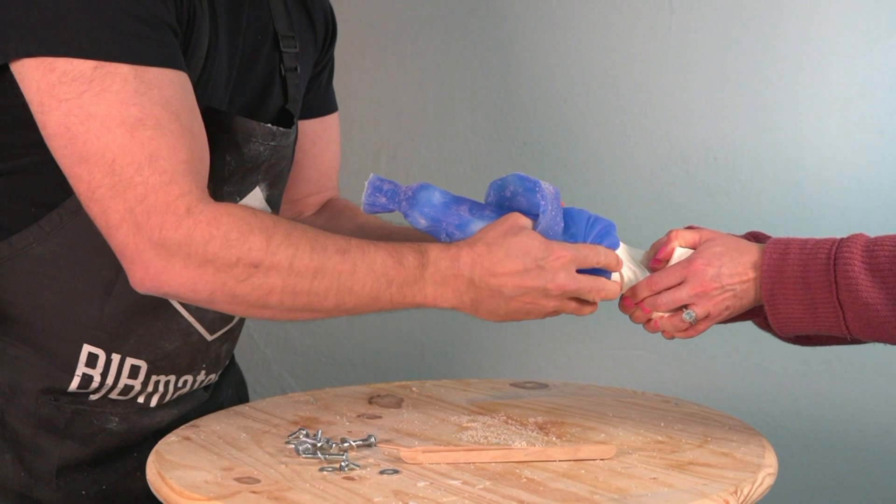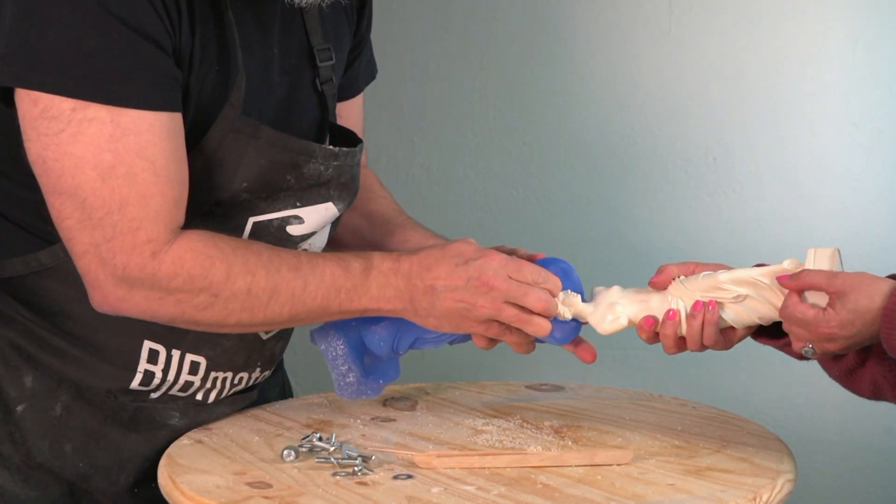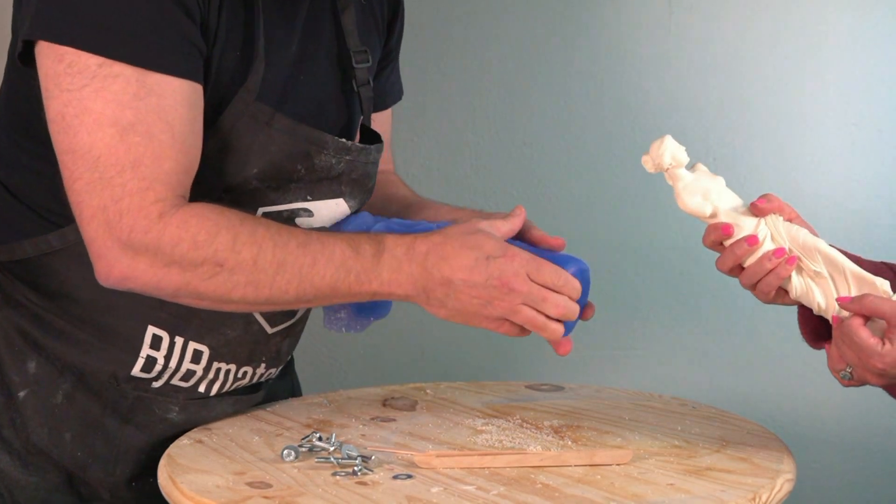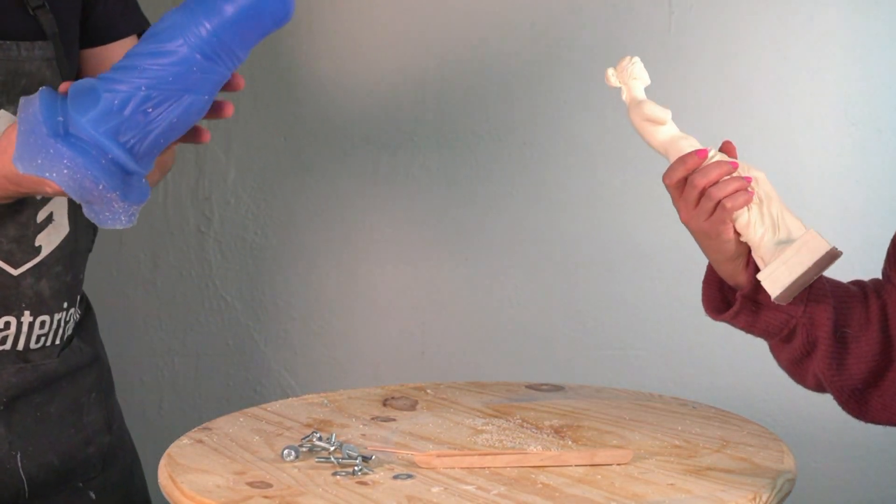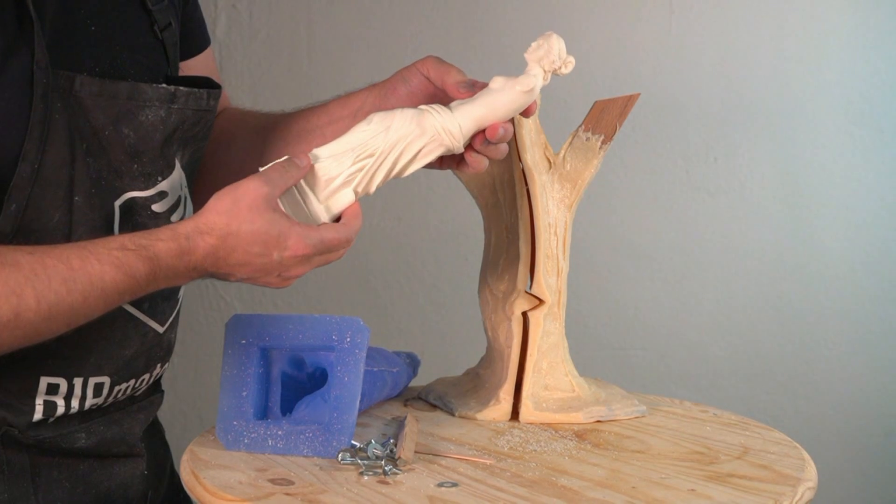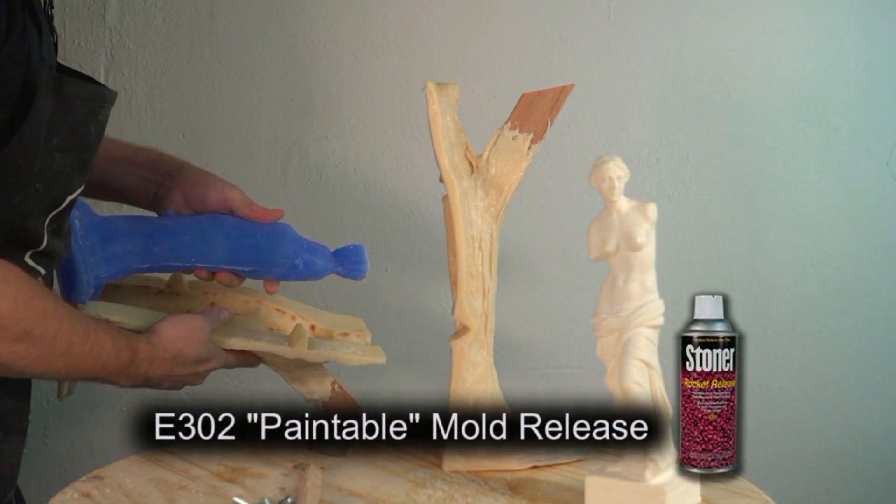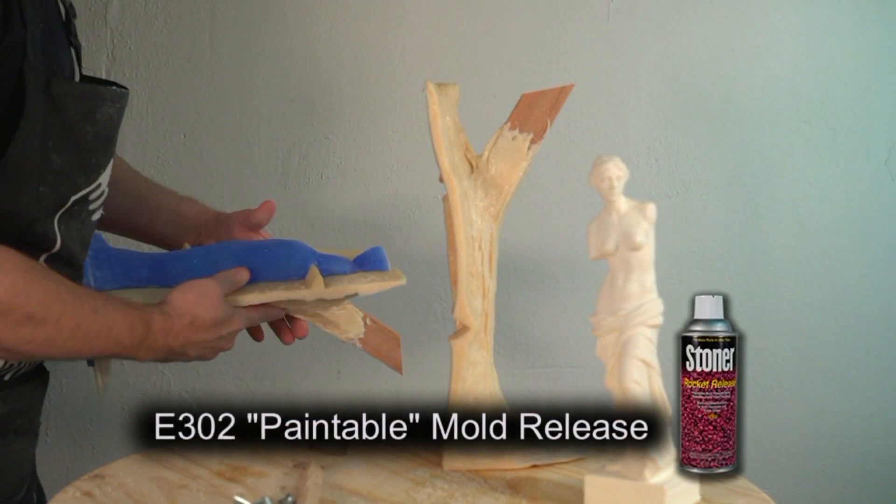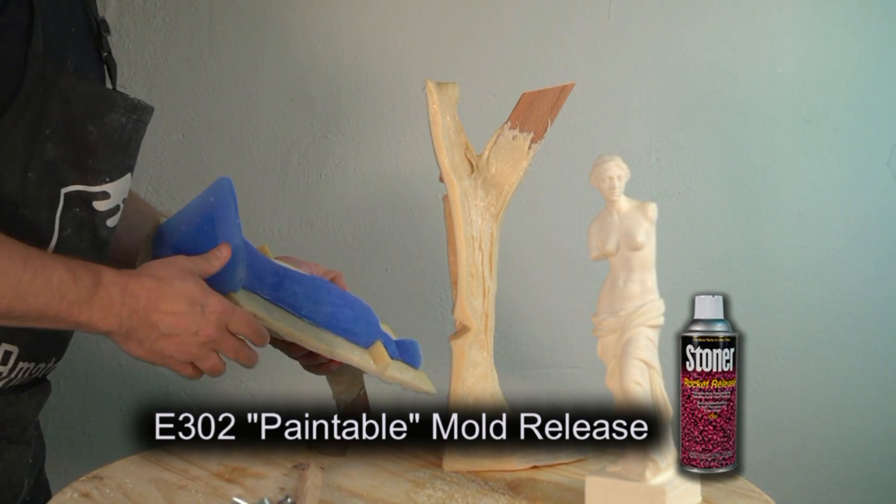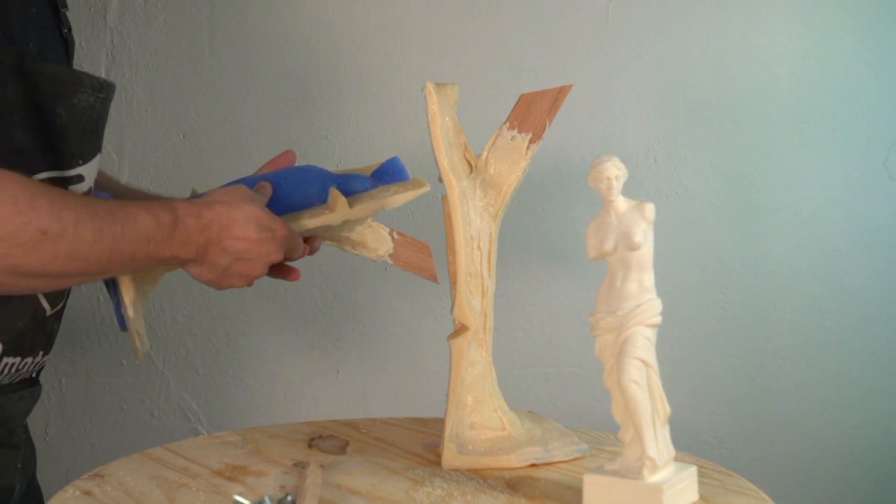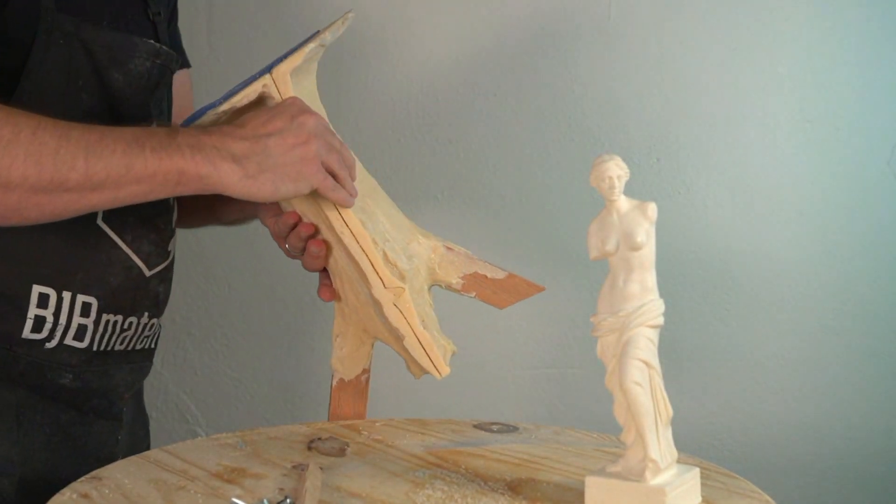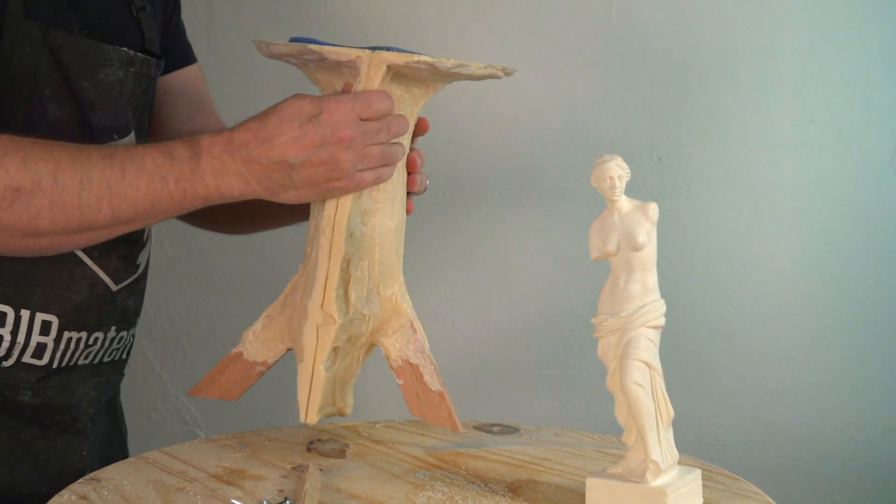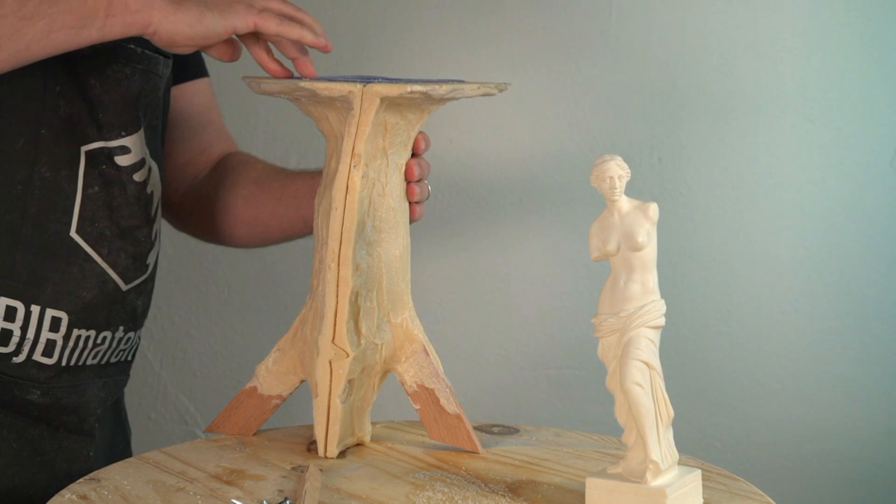Now we're going to turn that mold inside out and remove our first cast copy. We got a nice bubble-free copy in TC-802 casting resin. I didn't use any mold release for casting this part, but if I did I would want to use a paintable mold release like E302, which has minimal residue and is easy to clean off cast parts. We're going to come back to this resin cast in just a minute, but for now we're going to reassemble the mold and cast another one.